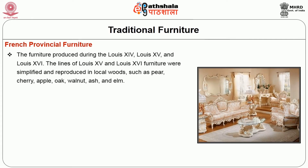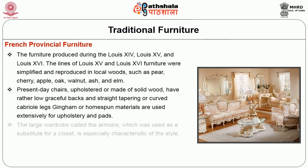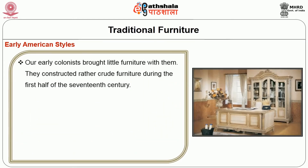Other popular Victorian pieces were drum-shaped tables, tiered corner tables, whatnot stands, candle stands, and drop leaf tables with center pedestals. French Provincial furniture was produced during the Louis XIV, Louis XV, and Louis XVI periods. The lines of Louis XV and Louis XVI furniture were simplified and reproduced in local woods such as pear, cherry, apple, oak, walnut, ash, and elm. Present-day chairs, upholstered or made of solid wood, have rather low graceful backs and straight tapering or curved cabriole legs. Gingham or homespun material is used extensively for upholstery. The large wardrobe called the armoire, used as a substitute for a closet, is especially characteristic of the style. Hanging shelves for pottery, glass, and brass were also associated with the style. Early pieces include trestled tables and four-poster beds with valances and draperies.